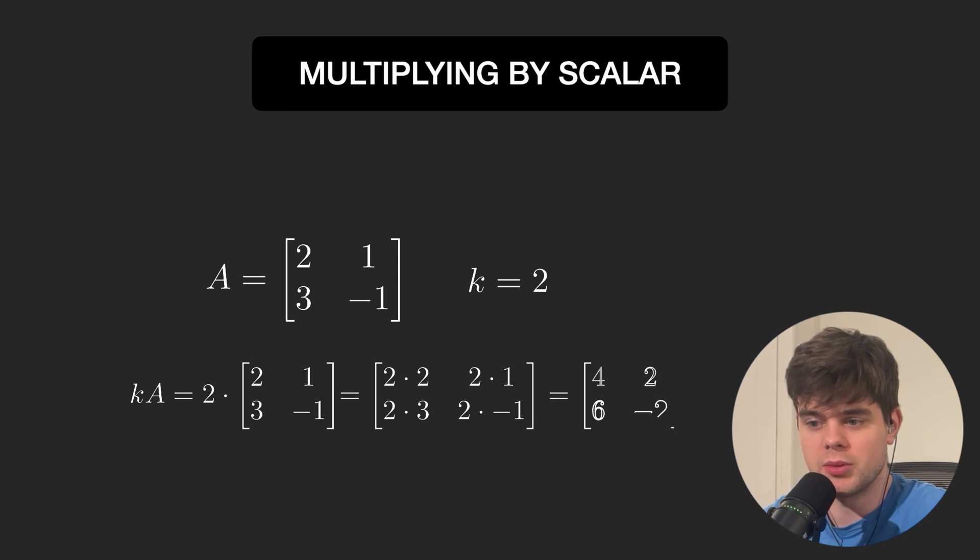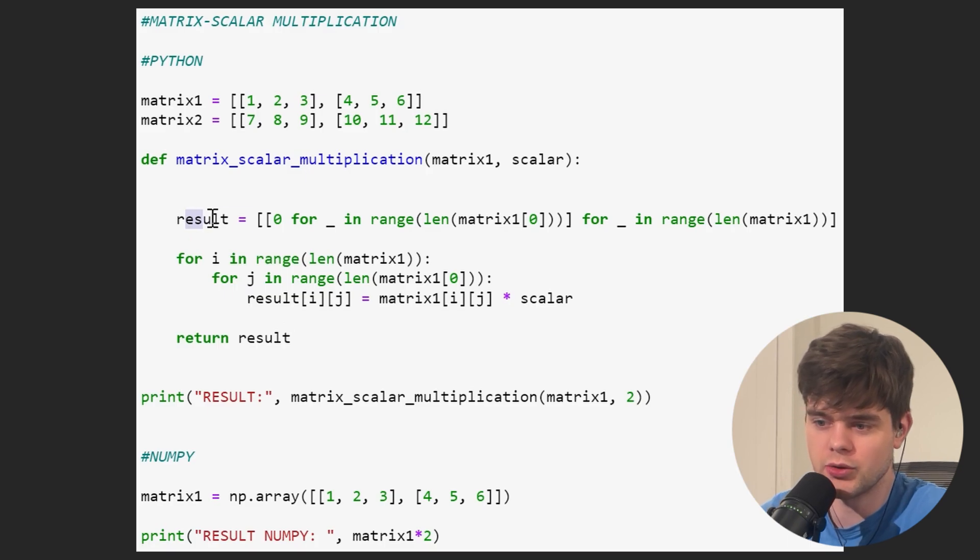We can also multiply each element of a matrix by a scalar. This is how it works in Python. We create a new matrix filled with zeros that has the same shape as our input matrix and override these values with the element multiplied by a scalar as we iterate through rows and columns of our input matrix.